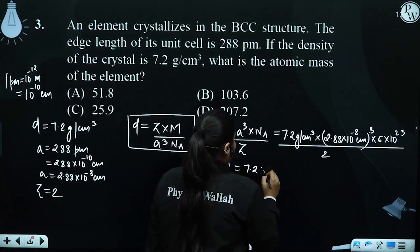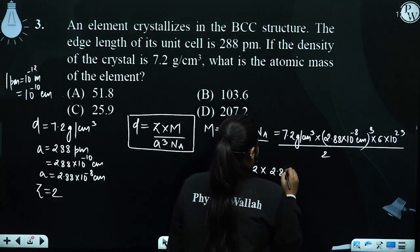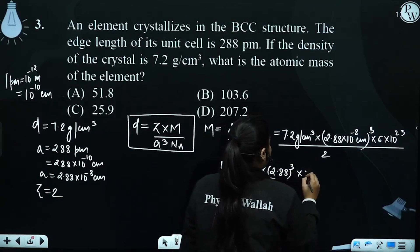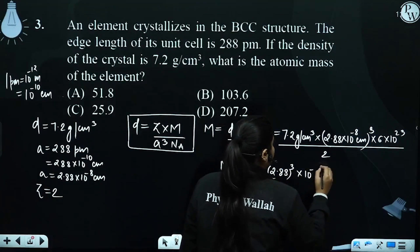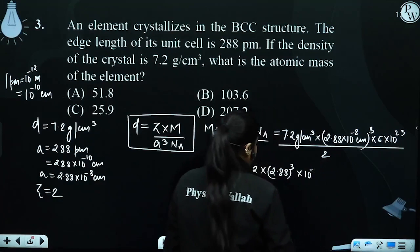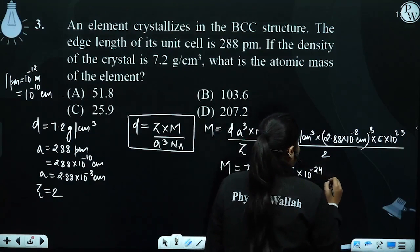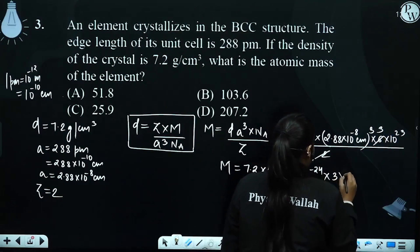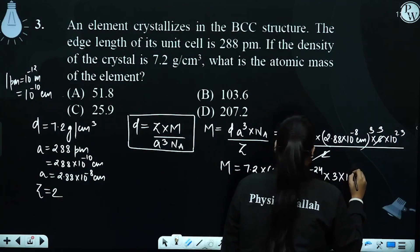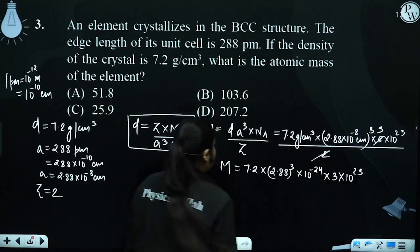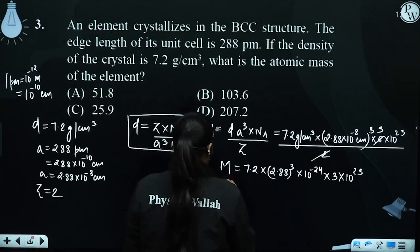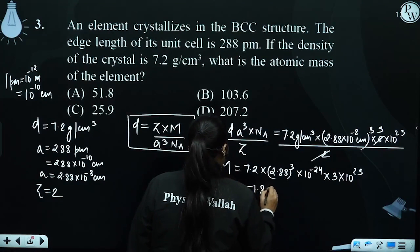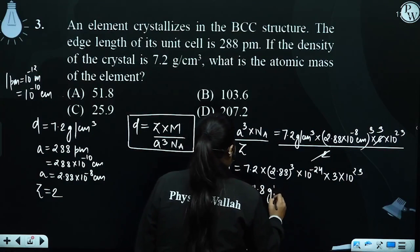Molar mass equals 7.2 into 2.88 cube, multiplied by 10 to the power minus 8 into 3, that is 10 to the power minus 24, into 6 into 10 to the power 23, divided by 2. When we solve it, we get 51.8 gram per mole.